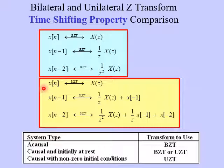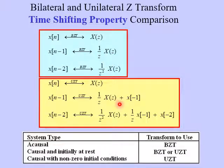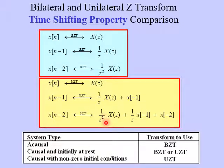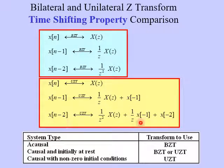With the unilateral Z-transform, we have the same time-shifting property, but with an extra term. For X of N minus one, we still get one over Z times X of Z, the same as the bilateral case, but now we have plus X at minus one. This X at minus one represents an initial condition of X prior to N equals zero. Likewise, for X of N minus two, we have one over Z squared times X of Z, but now we pick up two new terms: one over Z times X at negative one, plus X at negative two. So if we have a delay of two, we need two initial conditions.